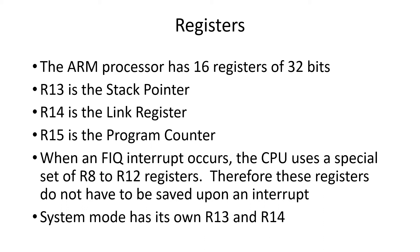When a FIQ interrupt occurs — and there are several different types — the CPU has a special set of registers R8 through R12. Therefore, the operating system can use those registers and not have to save them upon interrupt. The operating system has its own version of registers R13 and R14.